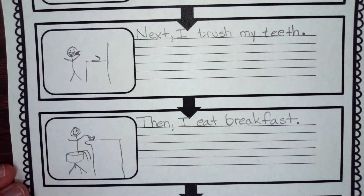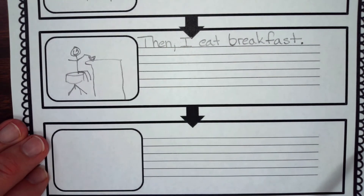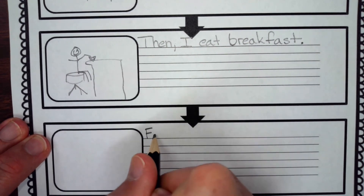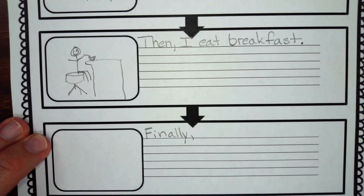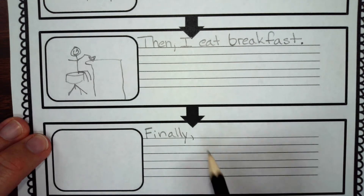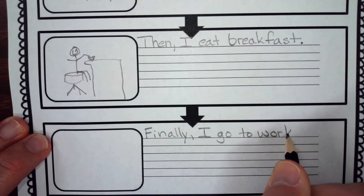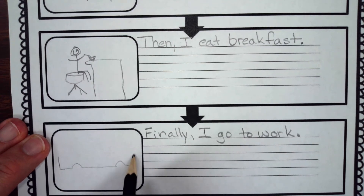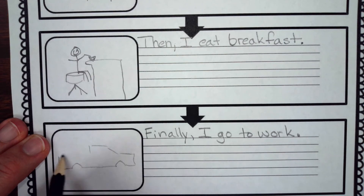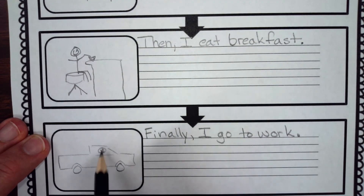If you would like to take more time on your pictures, that would be great — you can color them in. Then the last box: I'm going to start my sentence with the word "finally." Writers use the word "finally" to give their readers a signal that this is the last item in the series or the last item in the sequence. So, "Finally, I go to work." Then I will draw my quick illustration, and I go to work.